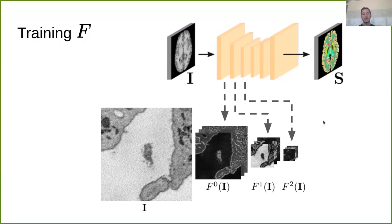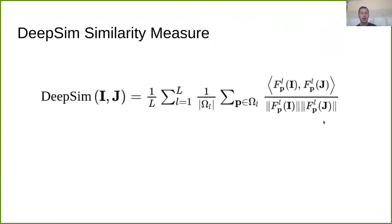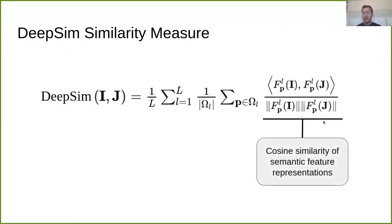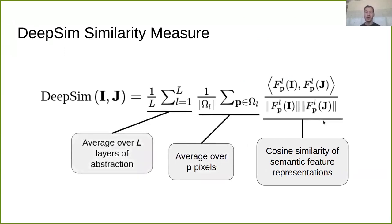And now we can take these representations and put them back into our DeepSim, and we end up with a metric like this, where on the right side we now have the cosine similarity between these semantic feature representations. We average these over the pixels of the image, and we average them over multiple layers of abstraction. So by taking into account different layers of abstraction here, we look at both localized concrete features from the shallower layers of our network, and more global abstract features from the deeper layers of our network. And in effect, we are building a feature pyramid here of semantic features.